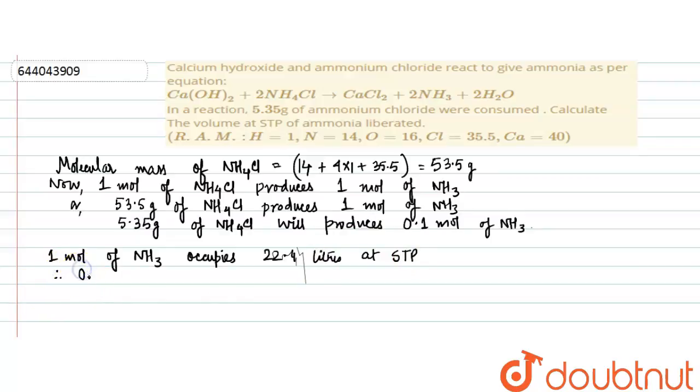Therefore, 0.1 mol of NH3 will occupy 22.4 into 0.1 equals 2.24 liters. Therefore, the volume of ammonia liberated at STP will be 2.24 liters.